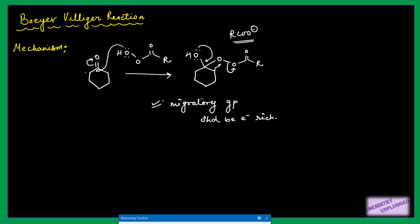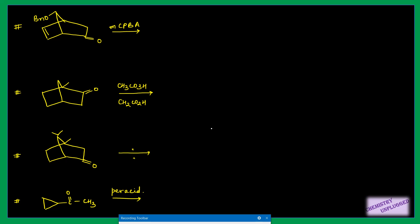Now you can easily decide the migratory aptitude of different groups. Whether it is cyclic, acyclic, or aromatic type of migratory group, you always have to find out which group is electron rich in nature and on that basis decide which group will migrate. The rest of the step is simple — this six-membered ring will become a seven-membered ring. This H+ will be removed and you will get a lactone as product. So we have understood the mechanism. The main important point is that the migratory group should be electron rich in nature.